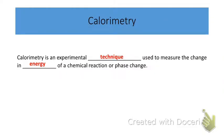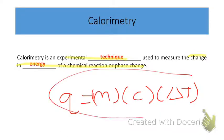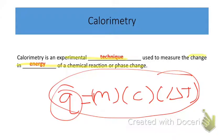Now let's get into calorimetry, now that we understand specific heat and the all-important heat transfer equation. Remember: Q equals mass times specific heat times change in temperature. Calorimetry is an experimental technique used to measure the change in energy of a chemical reaction or phase change, and we'll use this equation to determine the amount of heat lost or gained by the system.